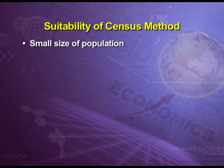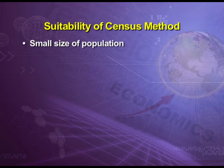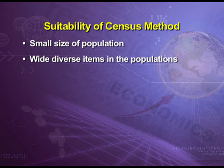Regarding the suitability of the census method, it is suitable when the size of the population is very small, because we have to include each and every item available in the population. The second criterion is when we have wide diverse items in the population. For example, if we want to conduct a survey in a small town where different persons from different educational backgrounds are living — graduates, illiterate persons, post-graduates, or researchers with PhDs — we cannot use any other method except the census method to find out educational qualifications of that area.